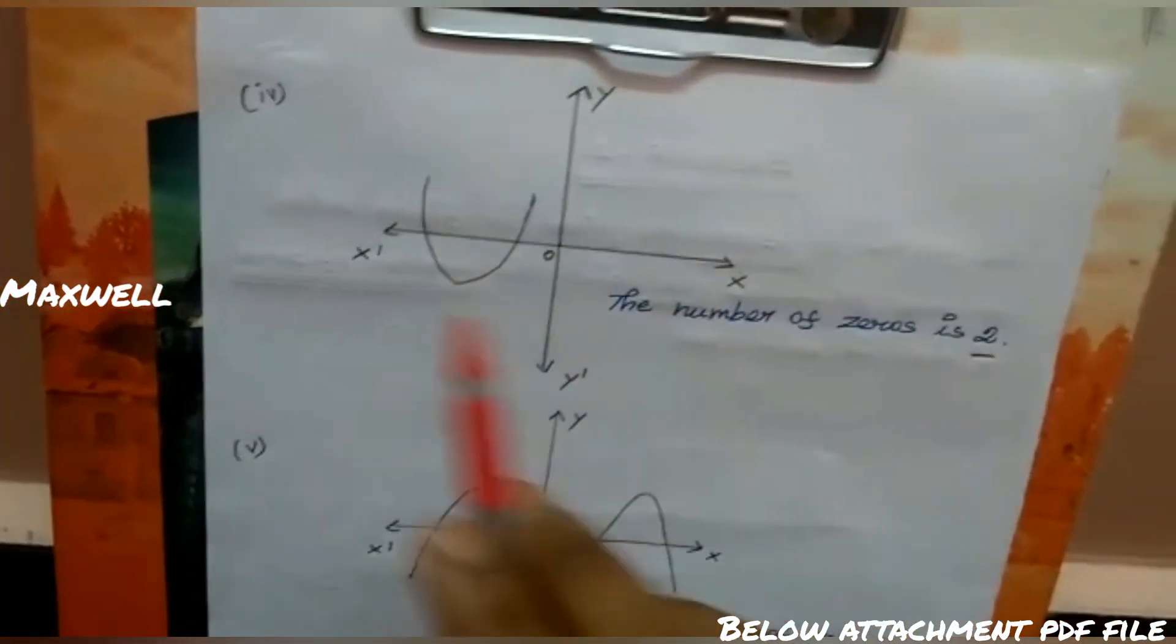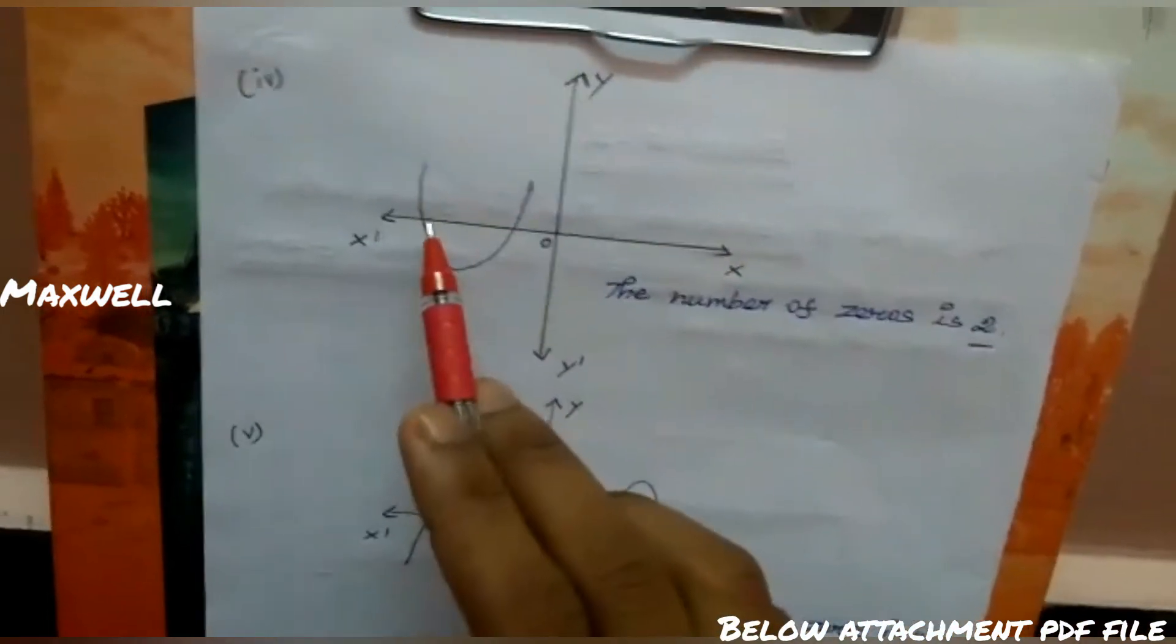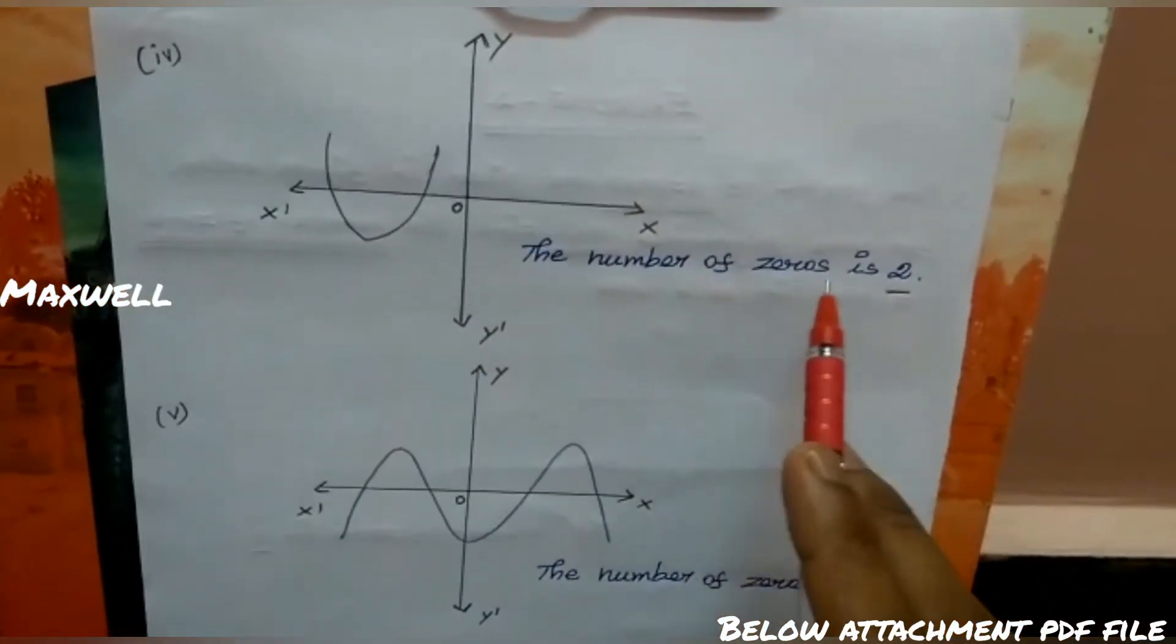Fourth case: that diagram touches the x-axis. The number of zeros is 2.